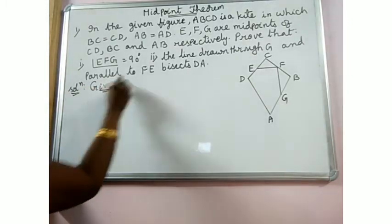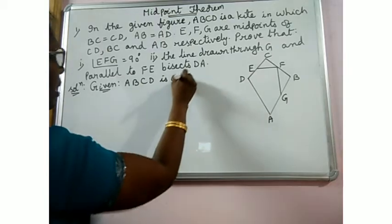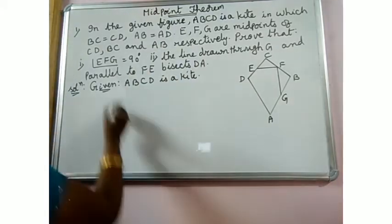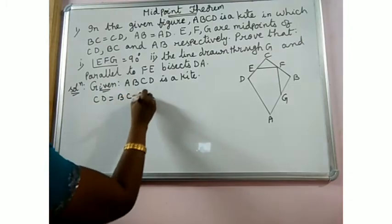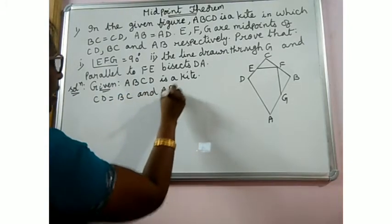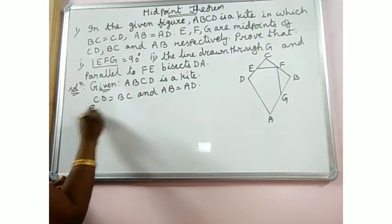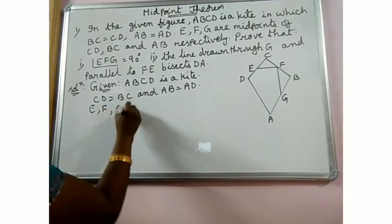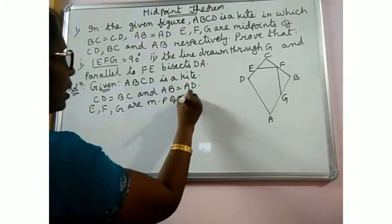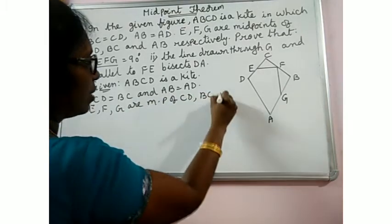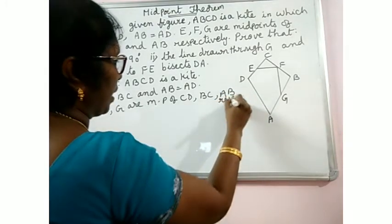What is given: ABCD is a kite, that is CD equals BC and AB equals AD. And also E, F, G are midpoints of CD, BC, AB respectively.